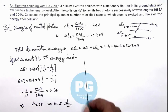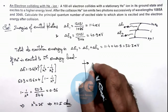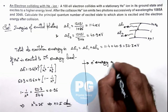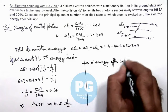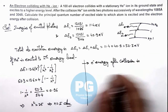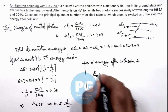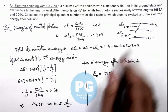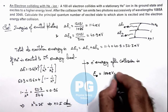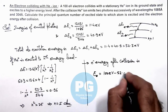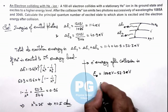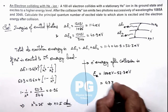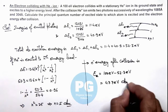Further, we calculate the electron energy after collision. The electron initially had 100 electron volt, of which 52.3 eV is absorbed by the helium atom. So the remaining energy of the electron after collision is 47.7 electron volt.